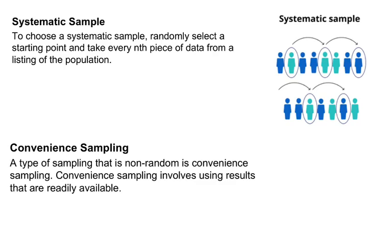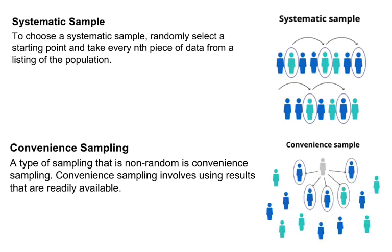Convenience sampling is probably used more often than it should be. This is not technically random sampling — you're really just asking whoever is convenient or at your disposal. For example, if I wanted to sample statistics students, I would probably just ask my own class because it's easy to gather that data.